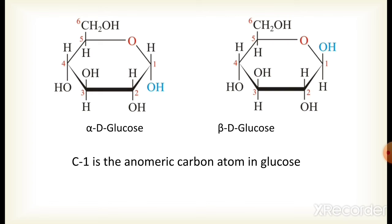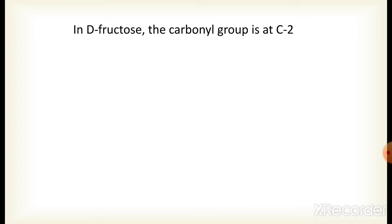Similarly in fructose — one more thing to note: carbon number 1 is the anomeric carbon atom in glucose. In fructose, alpha and beta anomers are also present, but fructose is a keto sugar. The anomeric carbon atom is not the first carbon atom; rather, carbon number 2 is the anomeric carbon atom in keto sugars.